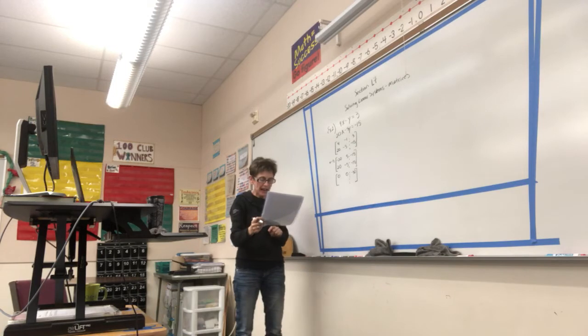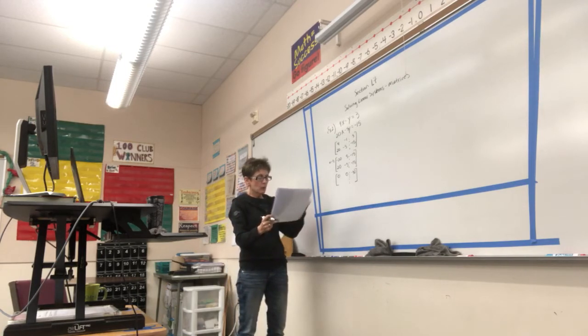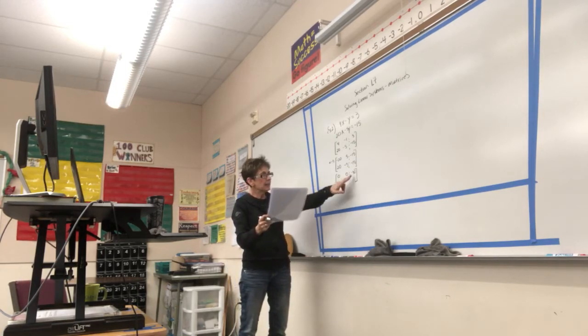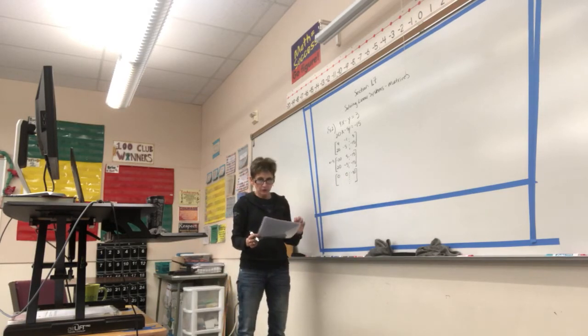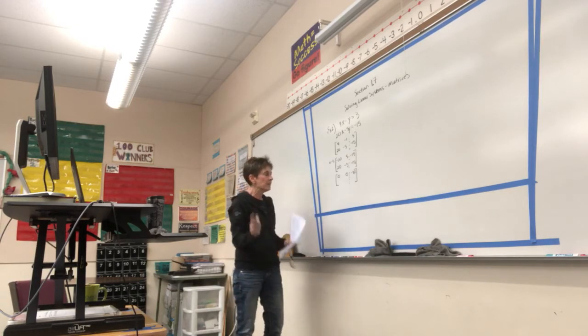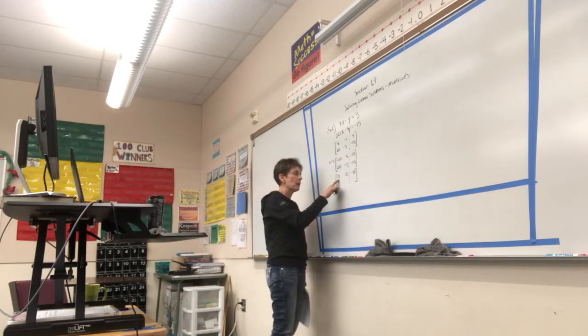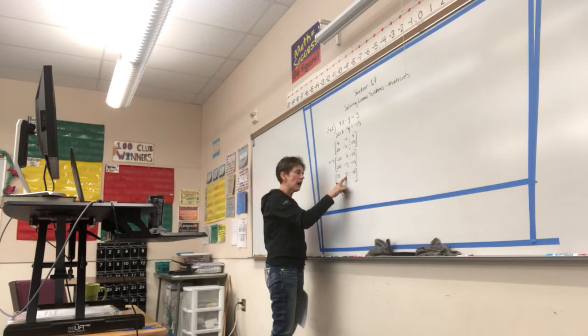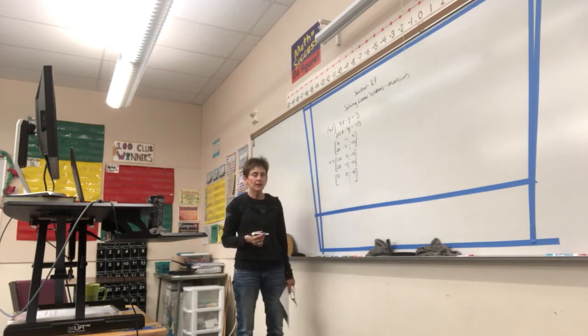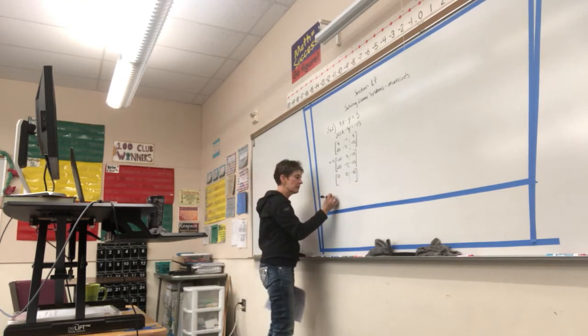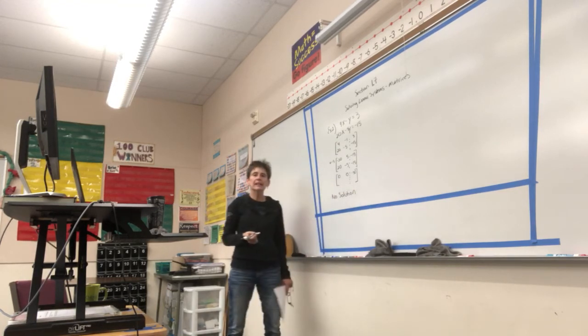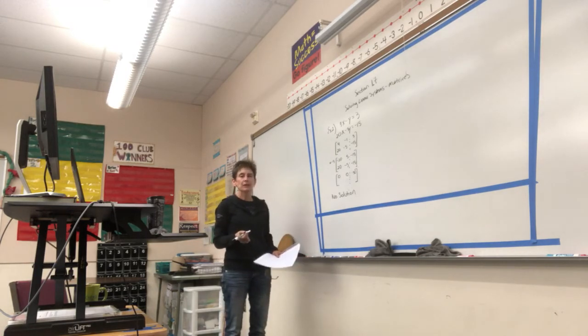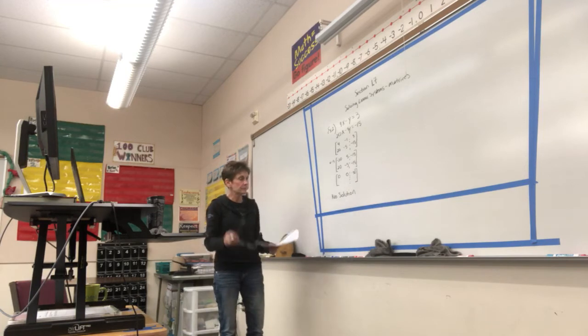If we have an entire row with all zeros on the left, and a number other than 0 on the right, we know that there is no solution to this system. Because what this is telling me is 0x plus 0y equals negative 30. That is not possible. So, we can stop this problem right here and write no solution. Because we're getting a statement that we know cannot be true. This doesn't typically happen, but it can sometimes happen.